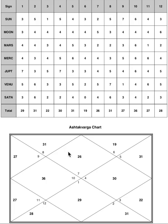Number seven is Libra lagna — check the pointer and go to Libra here. Moon is the tenth lord giving lots of points to the ascendant, and the lagna lord Venus is also contributing five points. Saturn is quite prominent, contributing four points. Saturn also contributes six points to the second house and the eighth house — those are very prominent houses for Saturn.